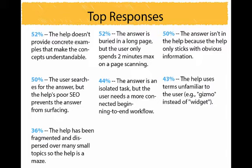These are the top seven — what I'm going to focus on through the rest of the presentation. Number one: the help doesn't provide concrete examples that make concepts understandable. The answer is buried in a long page but the user spends just two minutes max scanning. The answer isn't in the help because help only sticks with obvious information. The user searches but the help's poor SEO prevents the answer from surfacing. The answer is an isolated task but the user needs a connected beginning-to-end workflow. The help uses terms unfamiliar to the user. And the help has been fragmented and dispersed over many small topics — so the help is a maze.